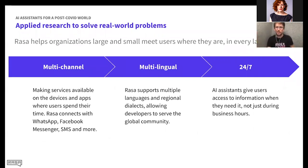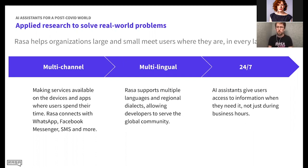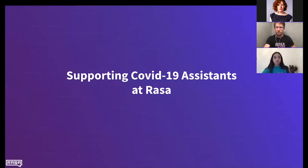Rasa can help with all of that. It's multi-channel — you can deploy it on text apps like WhatsApp, Facebook Messenger, and SMS, but also on call centers, Google Home, and more. It's multilingual, which is increasingly important in almost all countries. And of course it runs 24/7 without you needing to worry about it. With that, I'll hand over to Maddie.